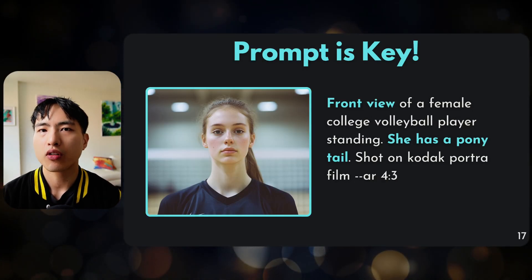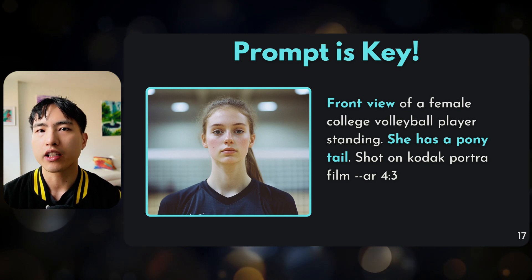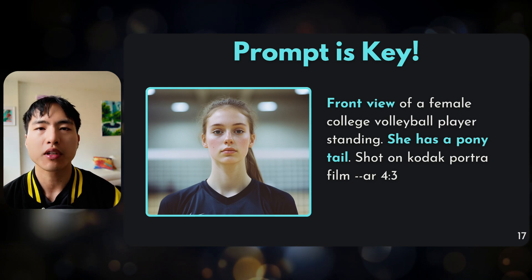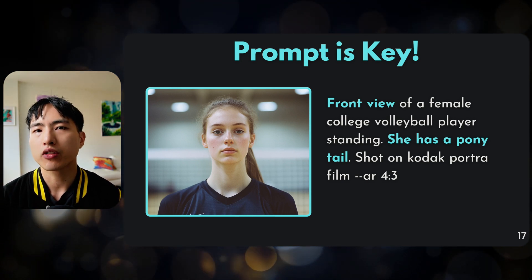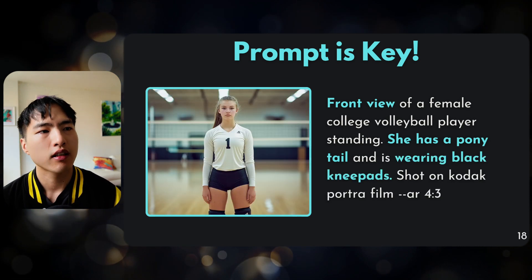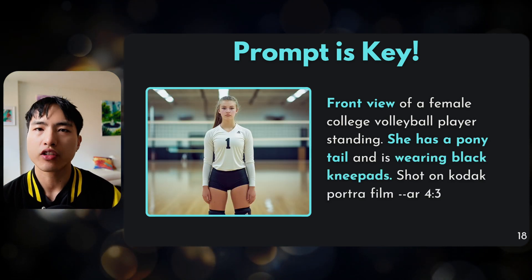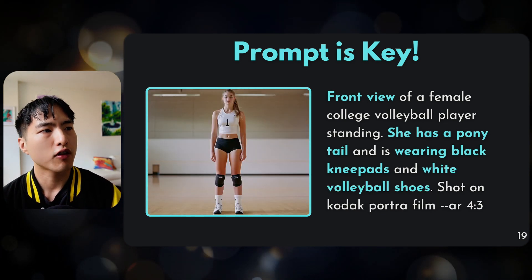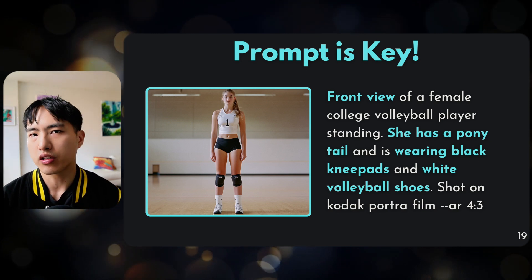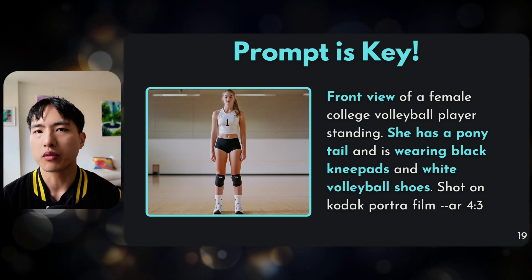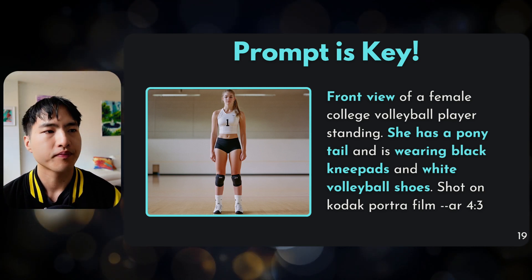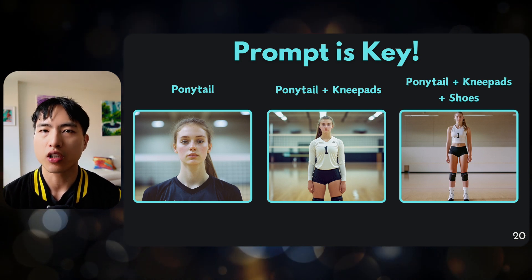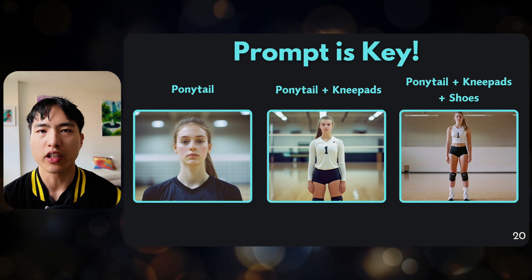Here's another example with a volleyball player, slowly adding more of her body into the shot. In the first prompt, I included that she has a ponytail to ensure her head is in all the photos. Next, I added that she's wearing black knee pads, and you can see photos taken from the knees up. In the final photo, I added white volleyball shoes — so now we can see everything from the ponytail all the way down to the shoes. This is the most effective way to frame your subjects; don't just rely on photography terms like 'medium shot' or 'full body shot.'